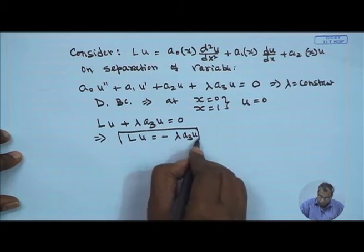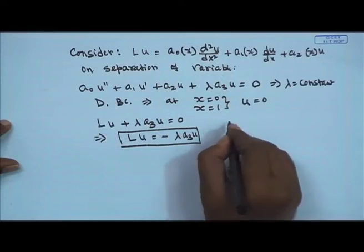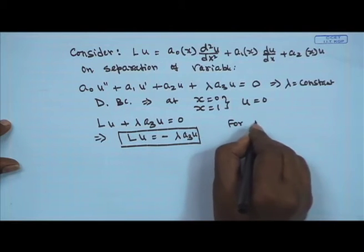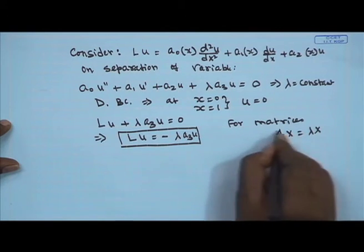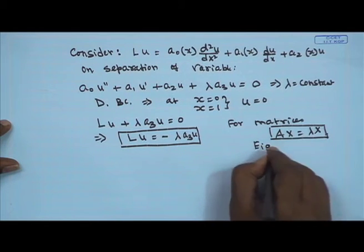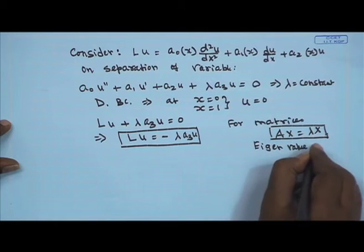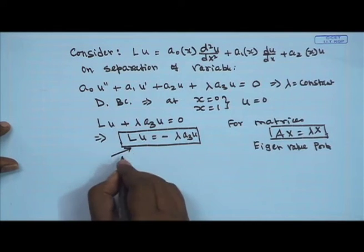If you look into the form of this equation, the equivalent notation in matrix algebra (the discrete domain) gives a similar form: Ax = λx, known as the eigenvalue problem. So in the continuous domain, Lu = -λa₃u is a standard eigenvalue problem.